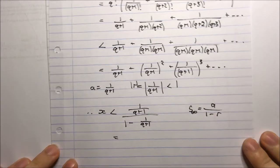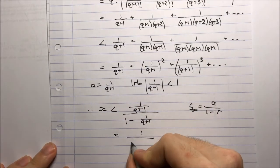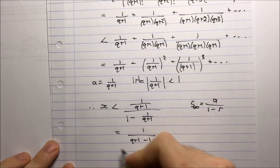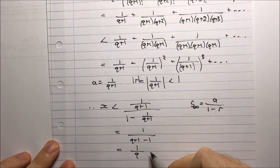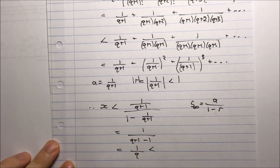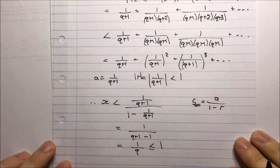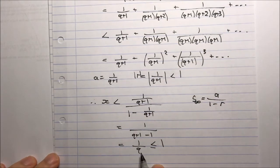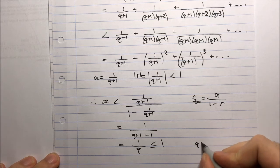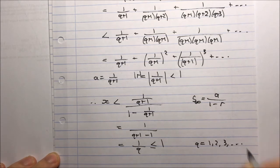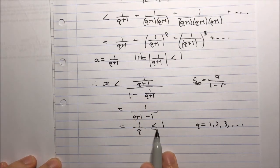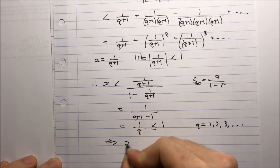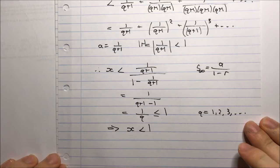Multiplying top and bottom by q plus 1 gives 1 over q plus 1 minus 1, which equals 1 on q. Now 1 on q is less than or equal to 1, since q is a positive integer greater than or equal to 1. So x is strictly less than 1 on q, which is less than or equal to 1, therefore x is less than 1.